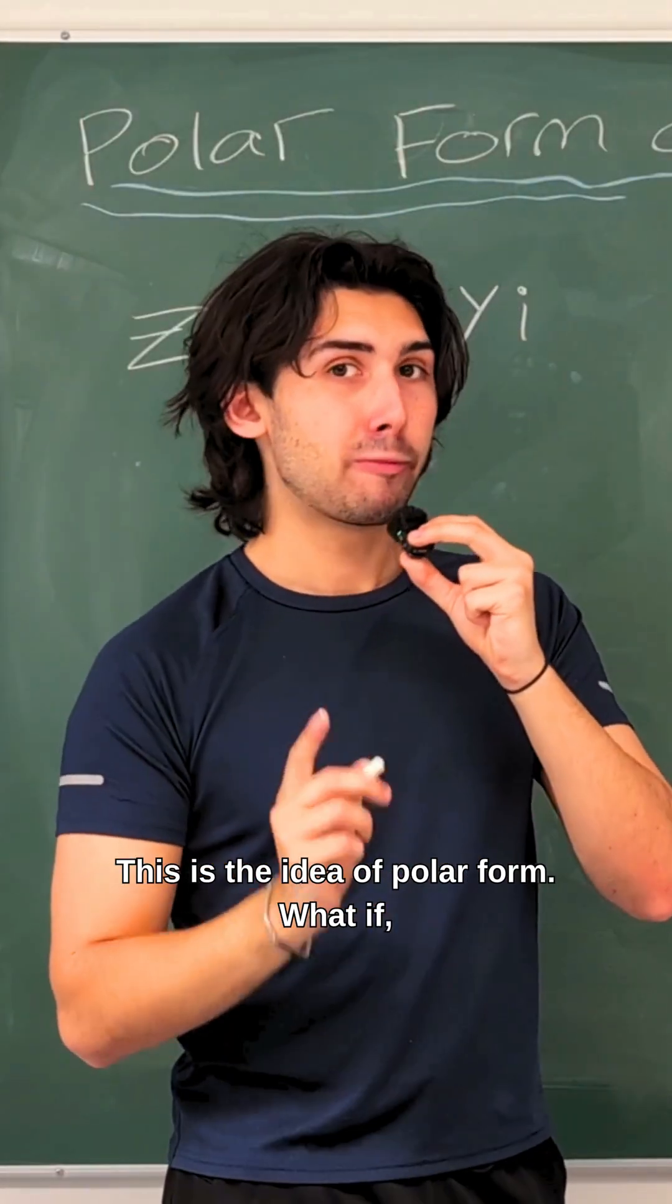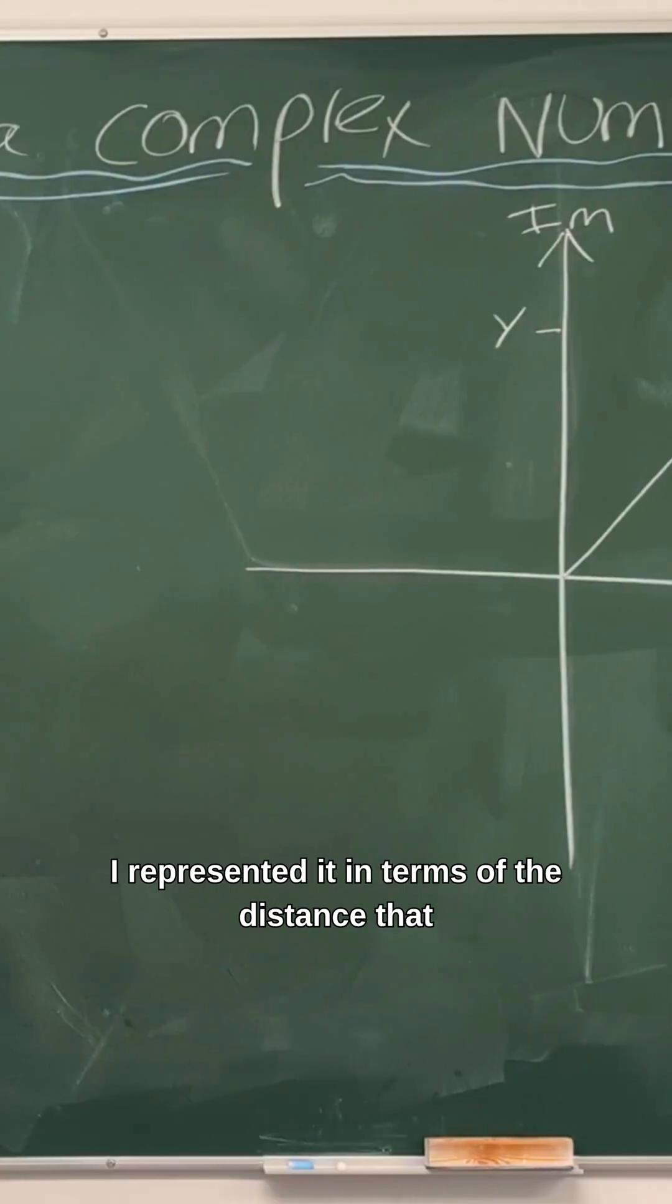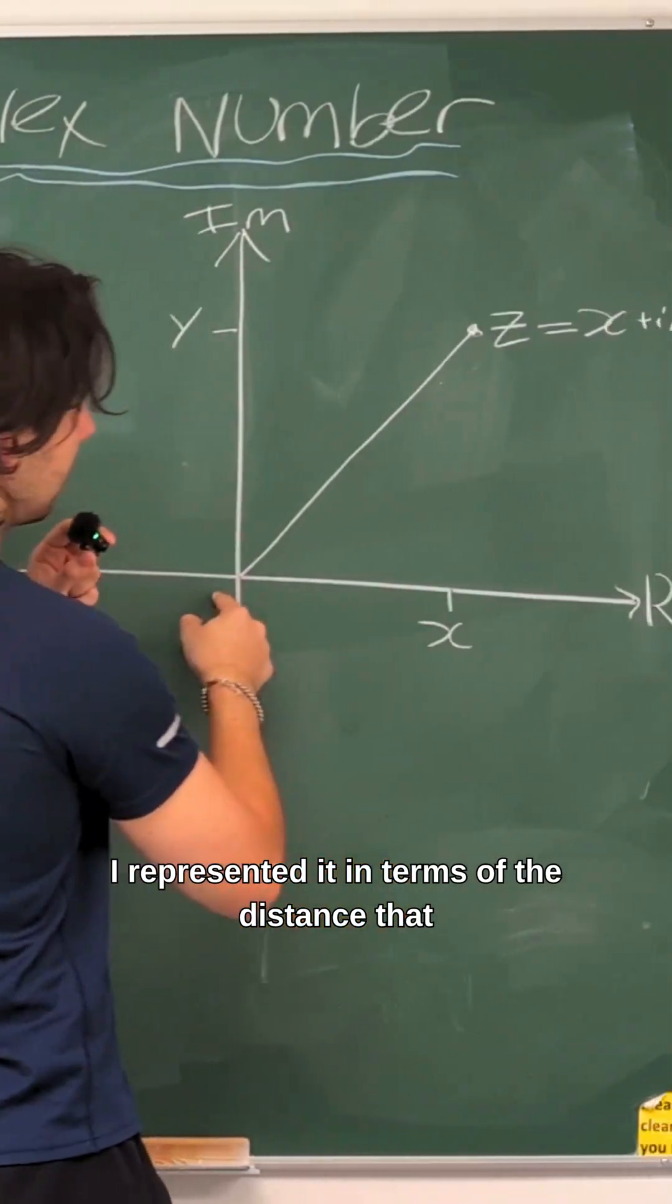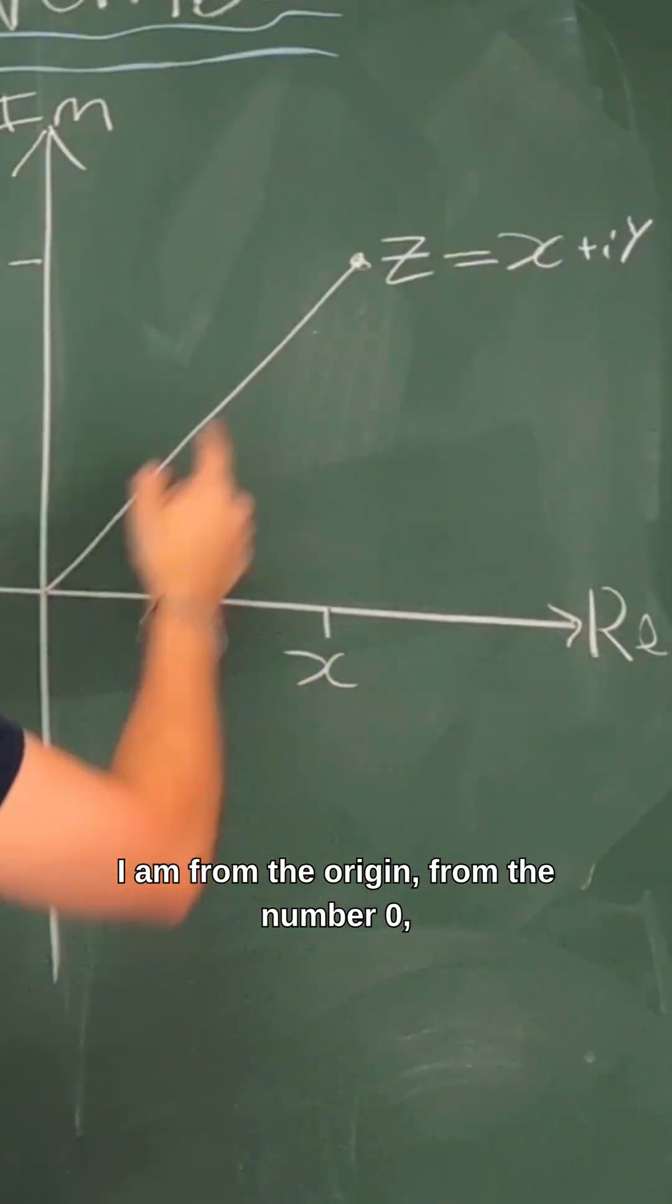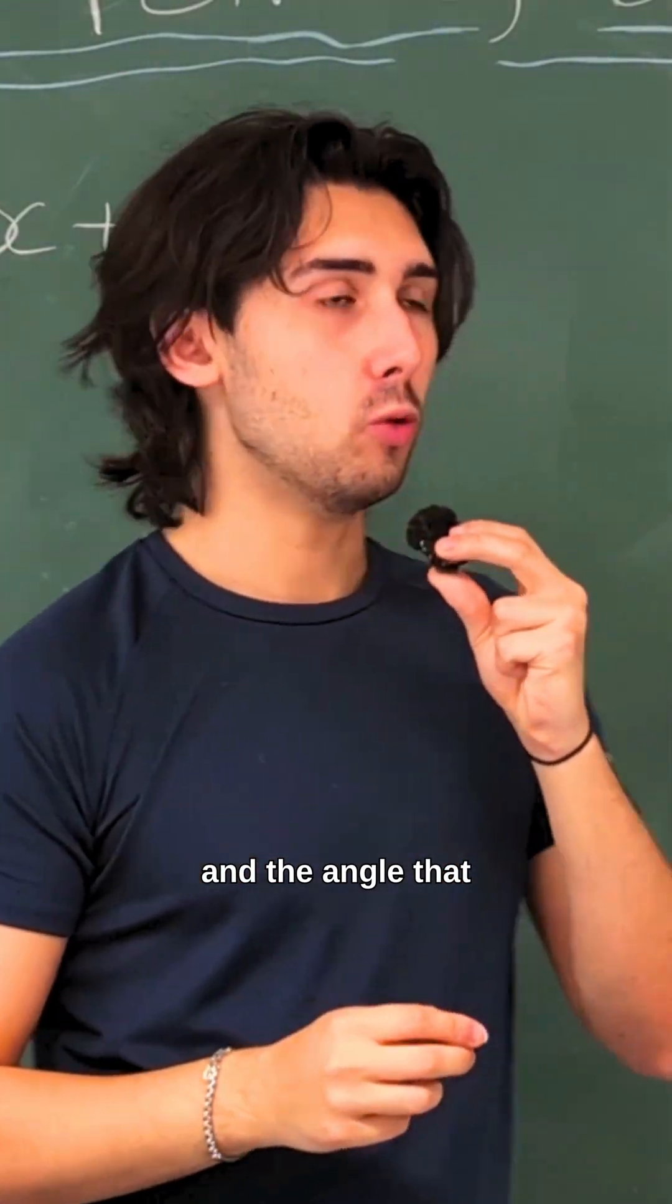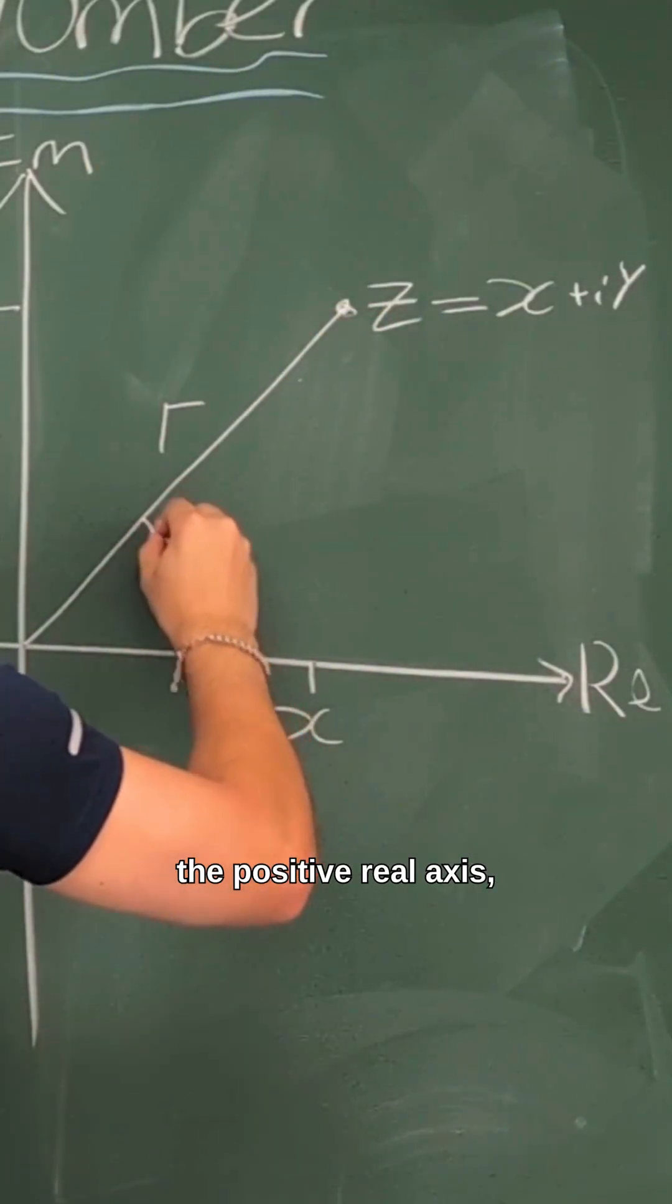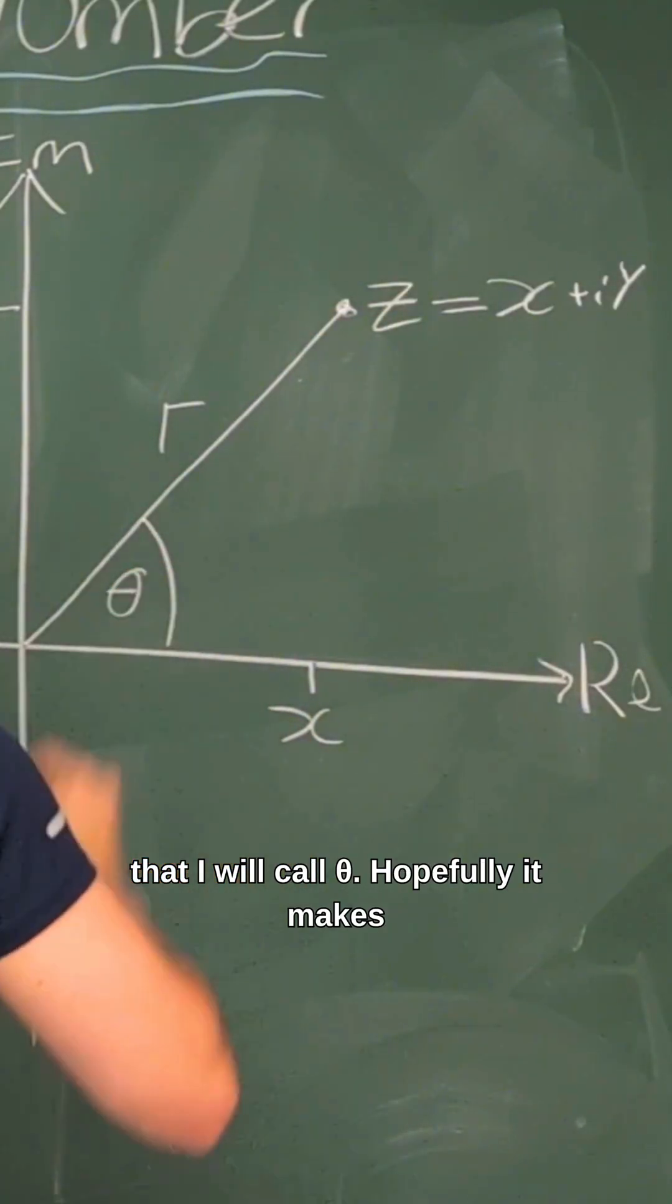This is the idea of polar form. What if instead of representing this complex number in terms of its x and y coordinate, I represented it in terms of the distance that I am from the origin, from the number zero, r, and the angle that this line that I've just drawn is making with the positive real axis that I will call theta.